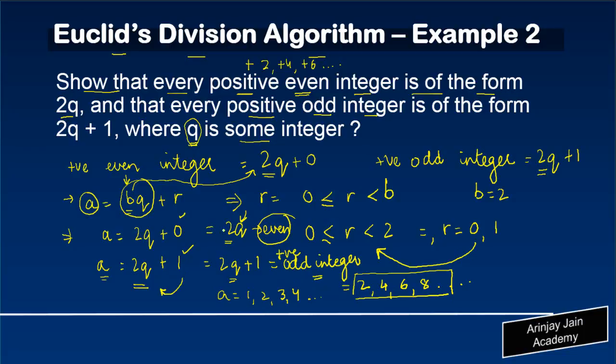And hence, we have proved that every positive even integer is of the form 2q, where q is some integer, and every positive odd integer is of the form 2q + 1.